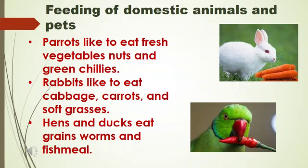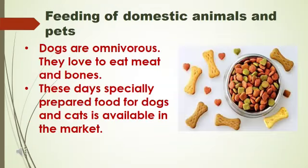Parrots also eat green chillies. Rabbits like to eat cabbage, carrots, cauliflower etc. Hens and ducks eat grains, worms and fish meal. Dogs are omnivorous — they love to eat meat and bones. They also eat bread, biscuits and love to drink milk.